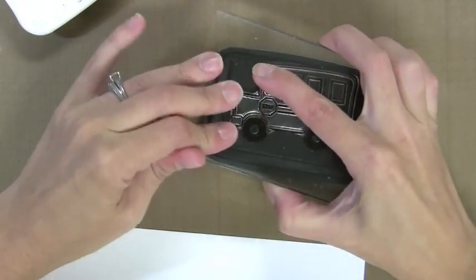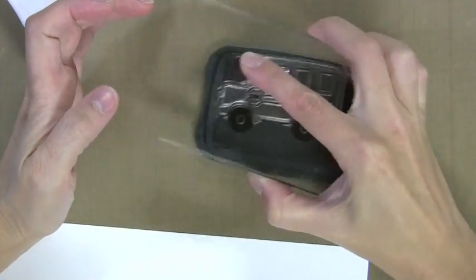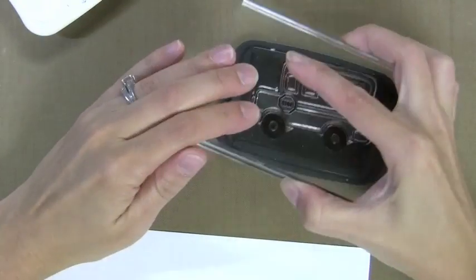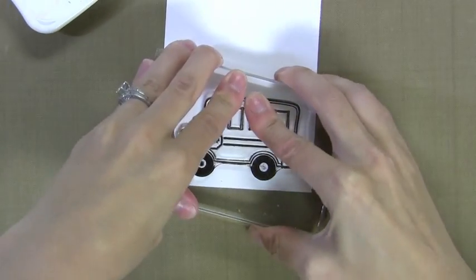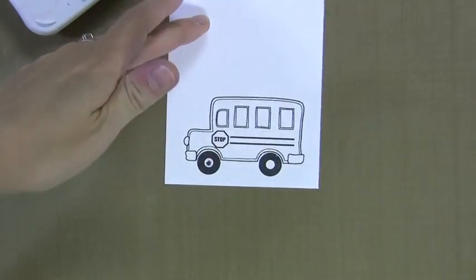I'm doing this because I want to use some Copic markers with it. My favorite combination of paper and ink for Copic markers is the Memento black ink and Neenah white cardstock, but there are several different options out there. Notice I am stamping on the end of a white piece of paper and you'll see why soon.